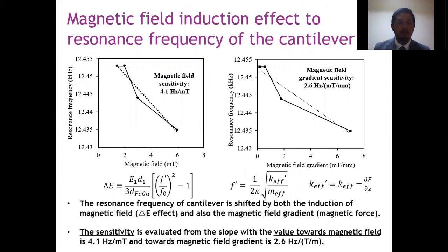By magnet induction, we can see that the resonance frequency is shifted by both magnetic field and magnetic field gradient. The frequency shift by magnetic field is caused by the delta E effect, while the shift by magnetic field gradient is caused by the magnetic force. The sensitivity is evaluated from the slope with the value towards magnetic field of 4.1 Hz per mT, and towards magnetic field gradient of 2.6 Hz per tesla per meter.